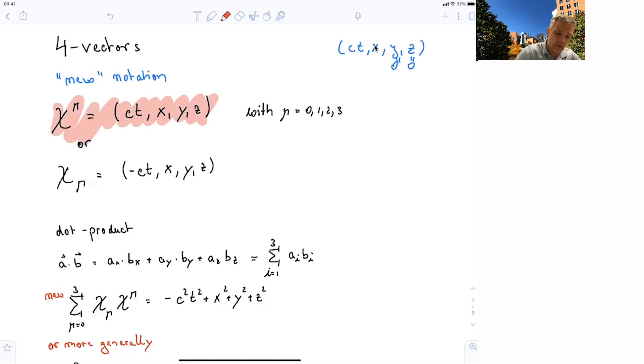Now I wrote a vector χ^μ here, with the μ as being the upper index. I can also introduce χ with the lower index, and you'll see in a little while why this is useful, where the zeroth component is not ct but minus ct.